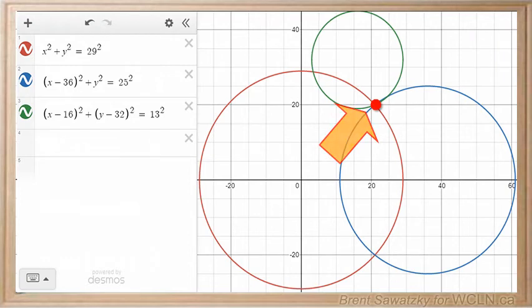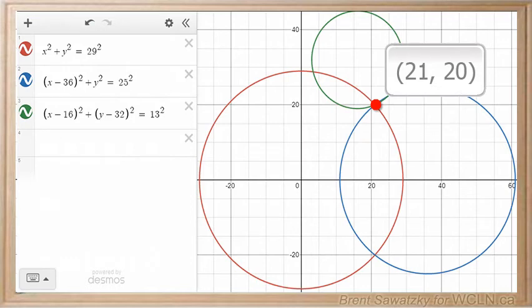And we click on there with a mouse, and Desmos tells us that we're at approximately 21, 20. So we know that the receiver must be here, 21 kilometers east and 20 kilometers north of the origin, what we consider to be 0, 0. So we've identified the location of the receiver.